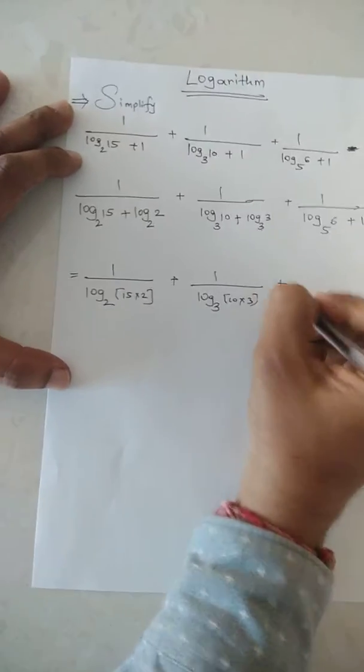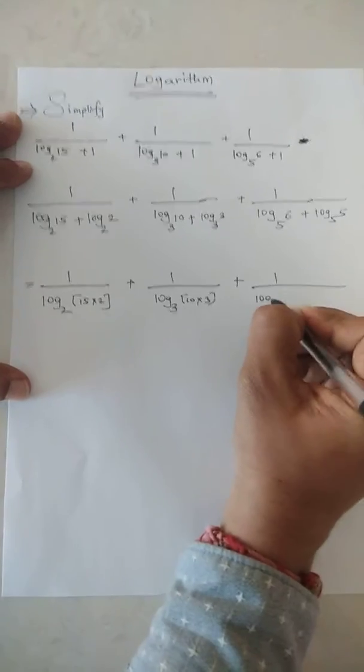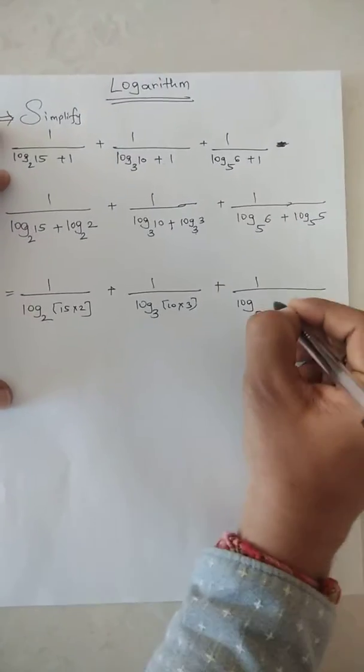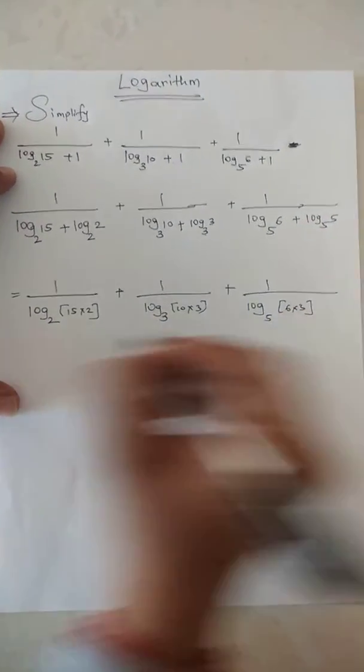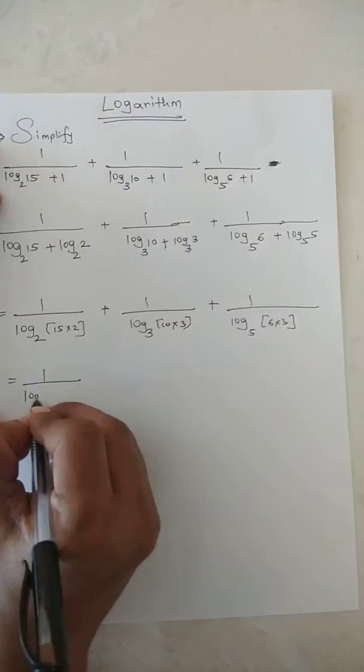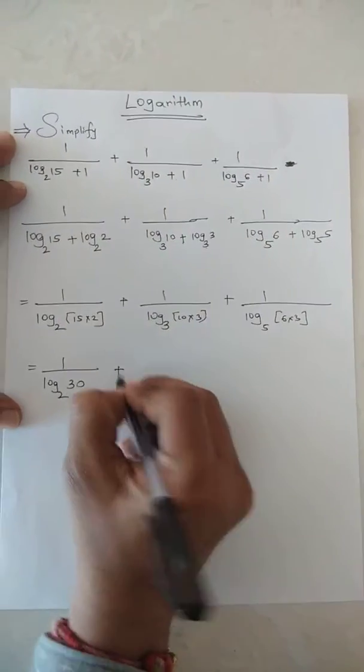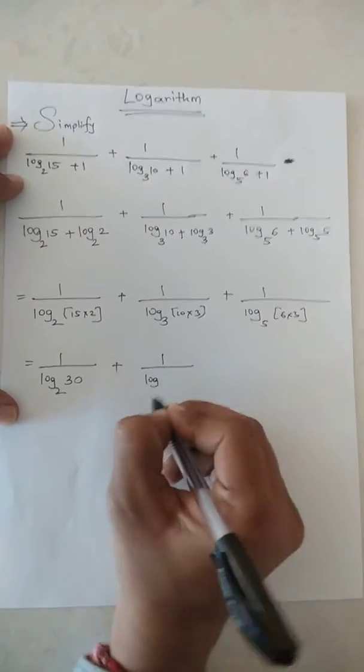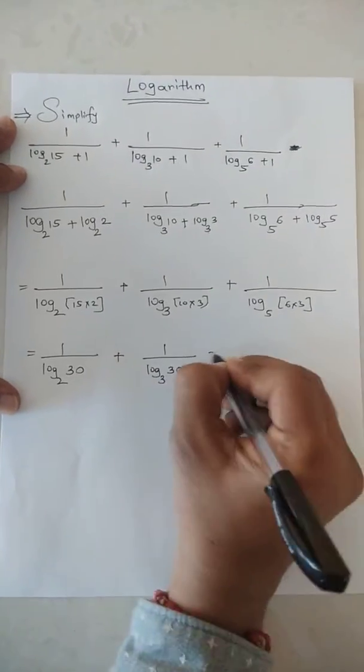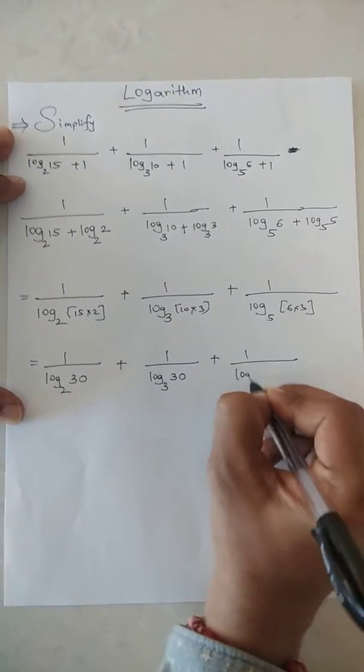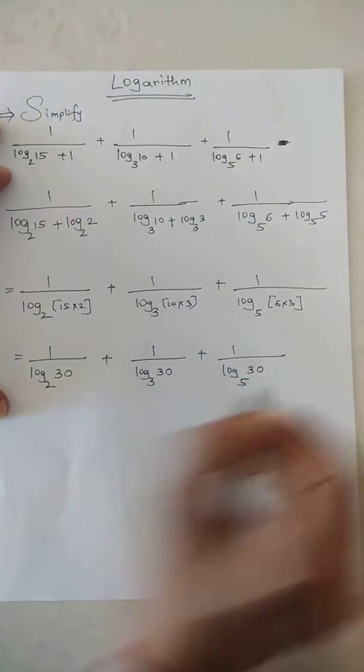So it equals 1 over log base 2 of 30, plus 1 over log base 3 of 30, plus 1 over log base 5 of 30.